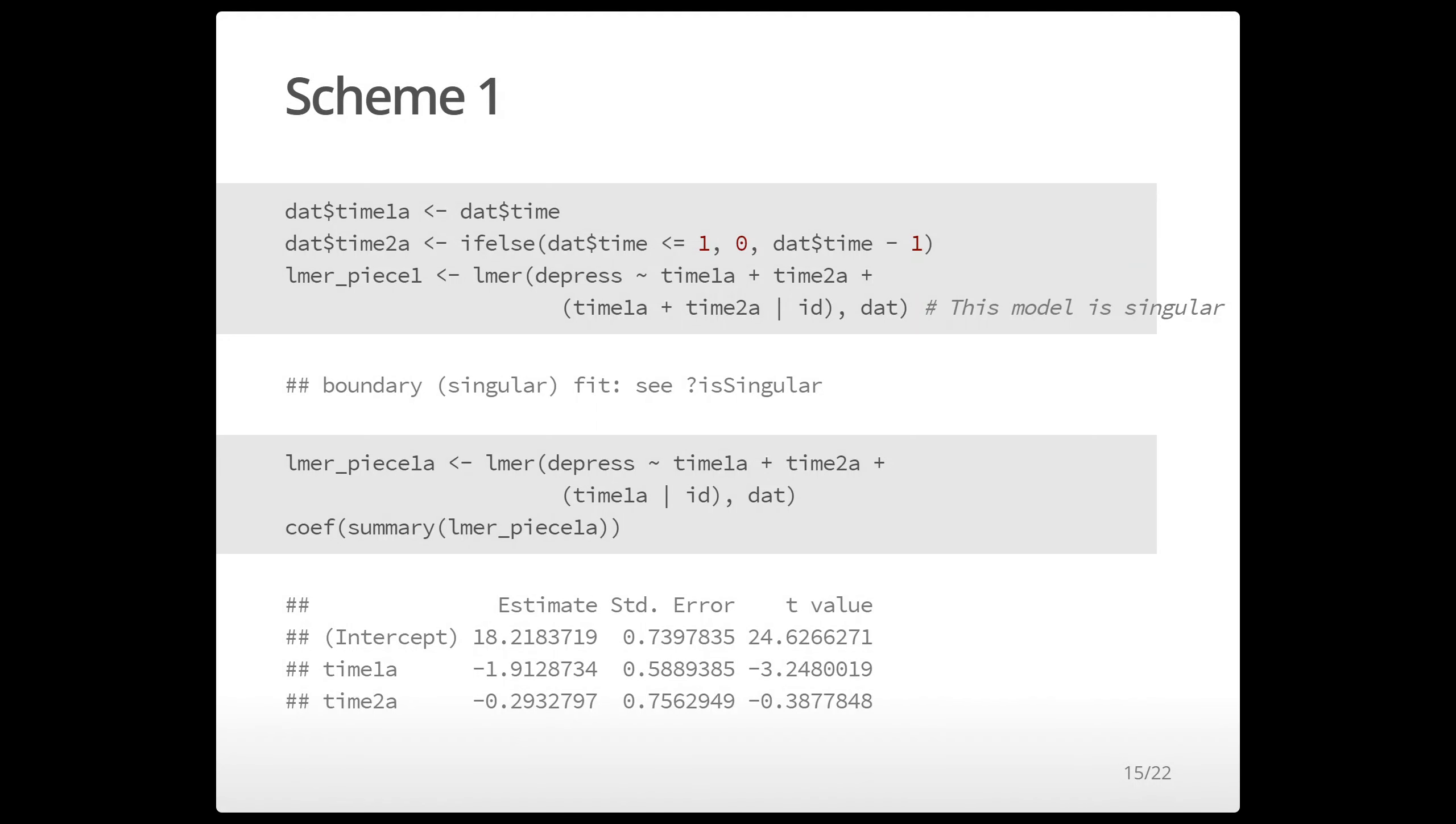And so here we can fit this model. It actually causes interesting singularity, I think it's because of how highly correlated in a sense the two parameters are. It doesn't actually produce a zero estimate for any of the variances which is what we usually see with singularity, which means there's something going on with some linear combination of the parameters.